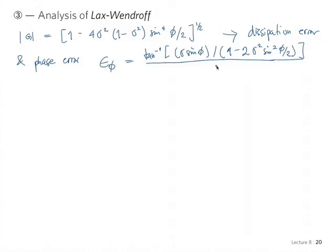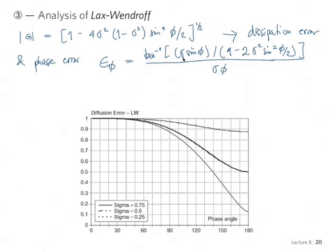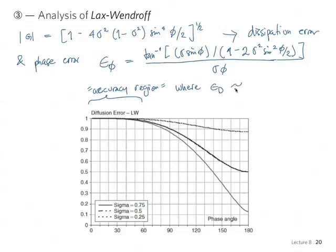We get arc tan of sigma sine phi, and there's a square leading to the fourth power here, involving 2 sigma squared sine squared of phi/2. This divided by sigma phi gives the dispersion error. Again, I have a plot of that. You can see from the diffusion error plot for the Lax-Wendroff scheme that we can estimate quantitatively the amplitude, and there's a flat region where the diffusion error is closer to 1 — our accuracy region.